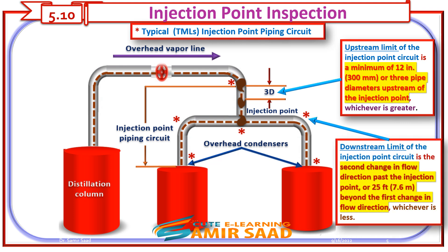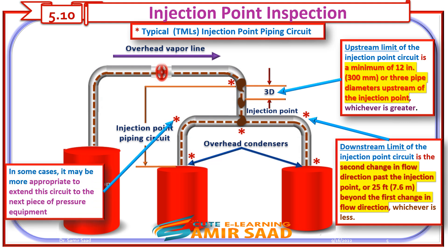The downstream limit of the Injection Point Circuit is the second change in flow direction past the Injection Point, or 25 feet beyond the first change in flow direction, whichever is less. In some cases, it may be more appropriate to extend this circuit to the next piece of pressure equipment.